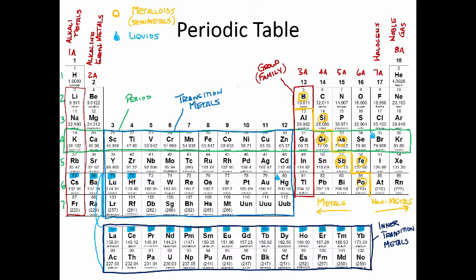Now let's note the gases on the periodic table with a red circle. The gases on the periodic table include an entire family, the noble gases, and hydrogen, nitrogen, oxygen, fluorine, and chlorine. So all of these elements in nature would exist as gases.